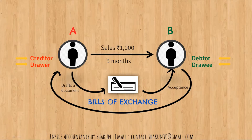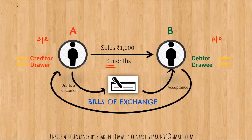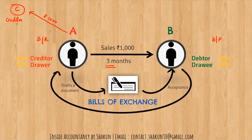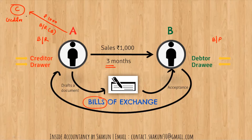Taking the same example: A sold goods to B, B accepted the draft, it became bills receivable for A and bills payable for B. A has to wait three months to receive payment from B. Now assume there is another person C, who is a creditor to A — meaning A has to pay, say, 1,000 rupees to C. Since the bill of exchange serves as money, A takes this bill and gives it to C as payment for the 1,000 rupees due.